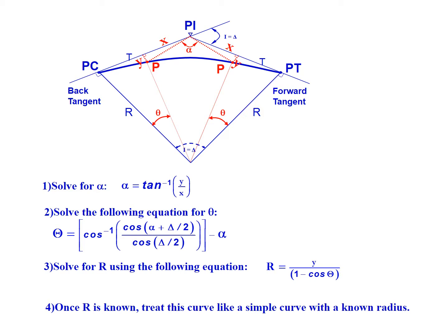The first thing we need to do is solve for alpha, where alpha is the inverse tangent of Y over X. That'll give us the angle alpha. Second, we need to solve the given equation for theta, where theta is equal to the inverse cosine of cosine of alpha plus delta divided by 2 divided by the cosine of delta divided by 2, and then we're going to subtract alpha from that term.